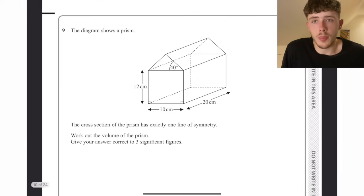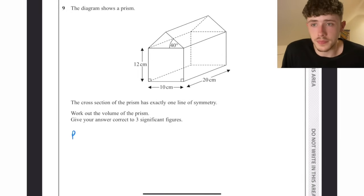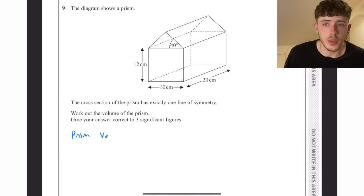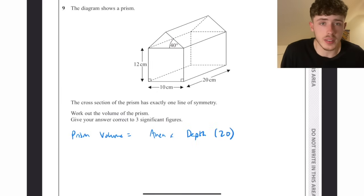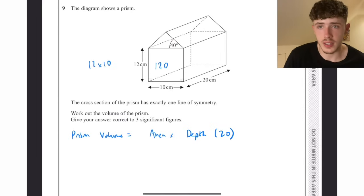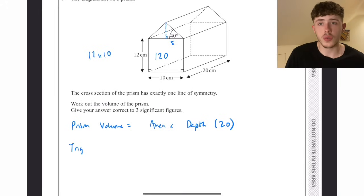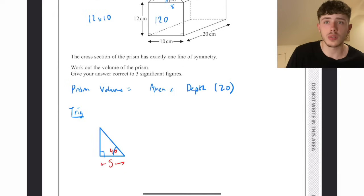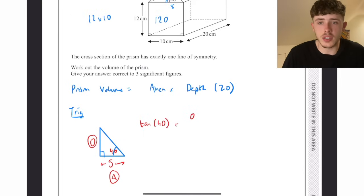Question number 9. We have a prism, a complicated looking prism. To get the volume of a prism, we do the cross-sectional area times by the depth. In this case the depth is 20. The rectangle at the front is 12 times 10, so 120. The hard part is working out the area of that triangle because we're not told the height. However, we can use trig, normal trig, to work out the height of that front triangle. Using tan, we have the opposite and the adjacent, the 5 being the adjacent.